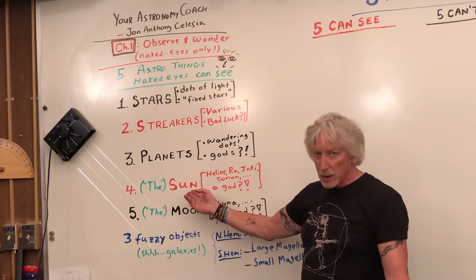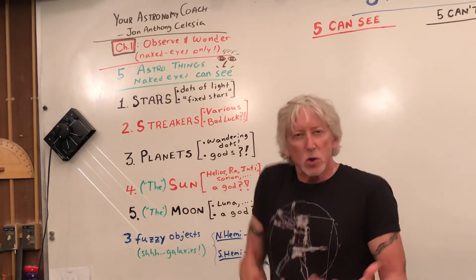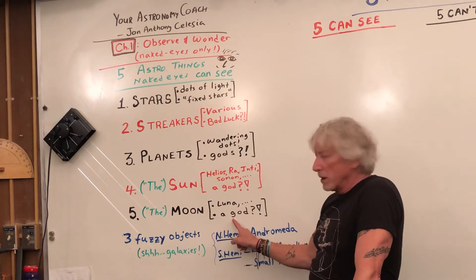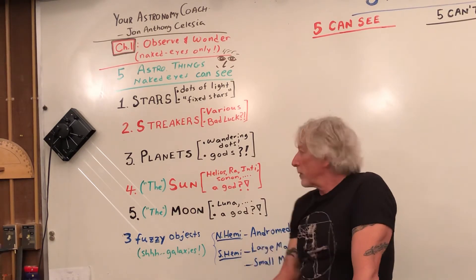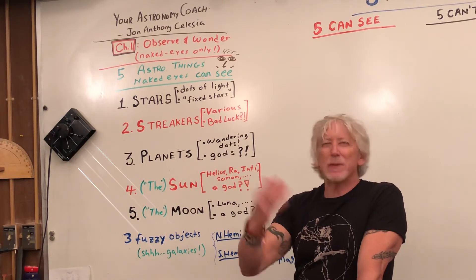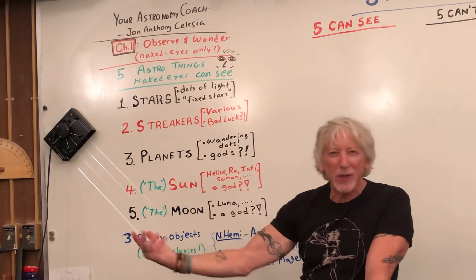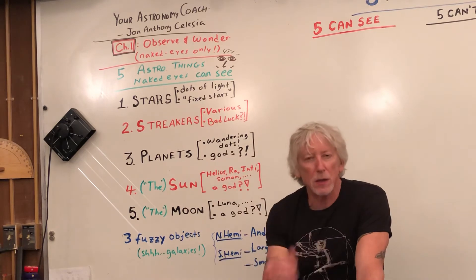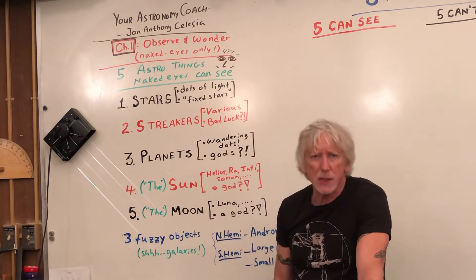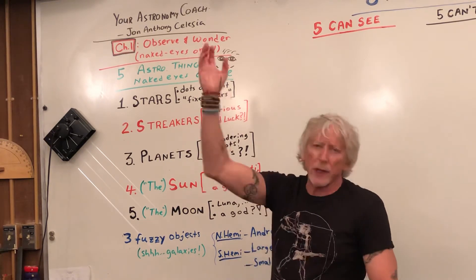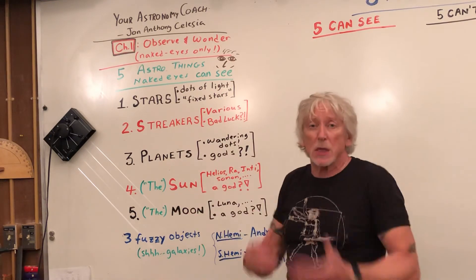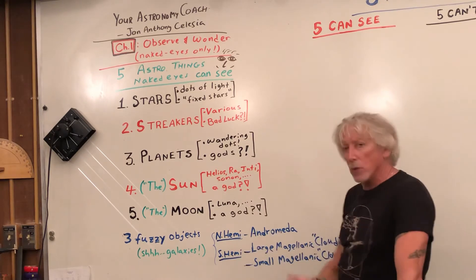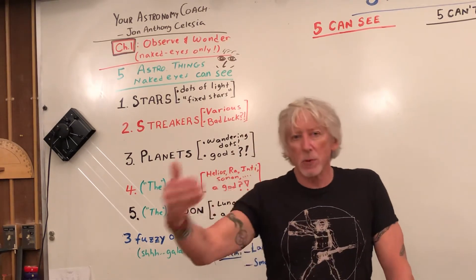I like to say Sun and Moon instead of 'the Sun' and 'the Moon' — Sun, Moon, Jupiter, Venus, Mars, Mercury. Are those gods? The god of the Sun was Apollo, but it depends on your culture. Egyptians, Native Americans, Chinese, Incans, the Middle East — all made tremendous contributions. People looked up with their naked eyes and wondered for thousands of years.